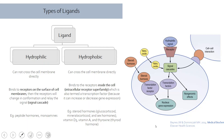Ligands are divided by hydrophobicity — either hydrophilic or hydrophobic. Hydrophobic ligands are lipid-based. Because the cell membrane is also a lipid bilayer, lipid-based hormones can pass directly through the membrane to find their target and create changes inside the cell. Examples include steroid hormones, mineralocorticoids, vitamins D and A, and thyroid hormones.